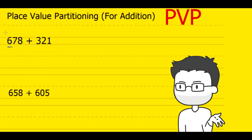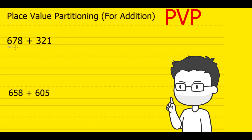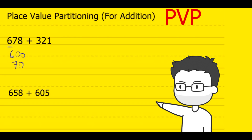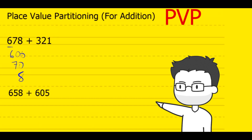Now that we've covered the basics, let's jump into the PVP strategy. When you use the PVP strategy, the first thing you have to do is break up the number into its place value parts. So if we break 678 into its place value parts, you have 600 in the 100's column, 70 in the 10's column, and 8 in the 1's column. The next step is to break the second number down into its place value parts, and you have to add the 100's with the 100's, the 10's with the 10's, and the 1's with the 1's.